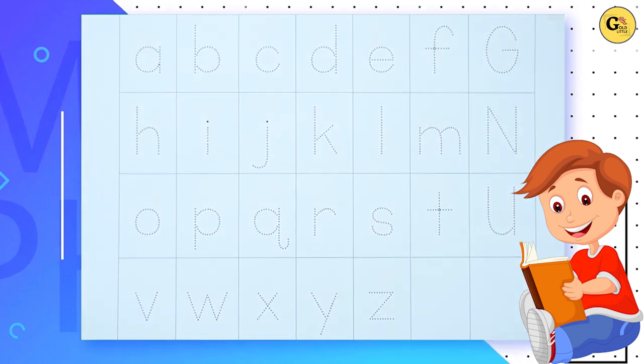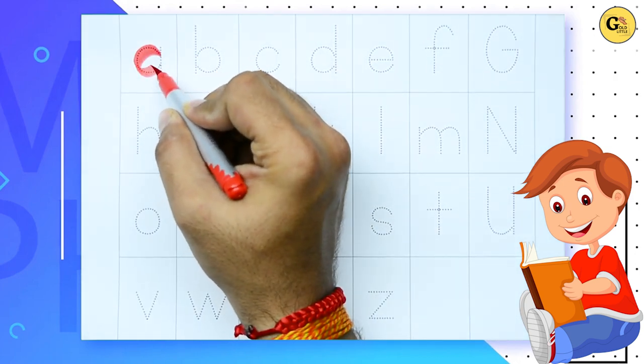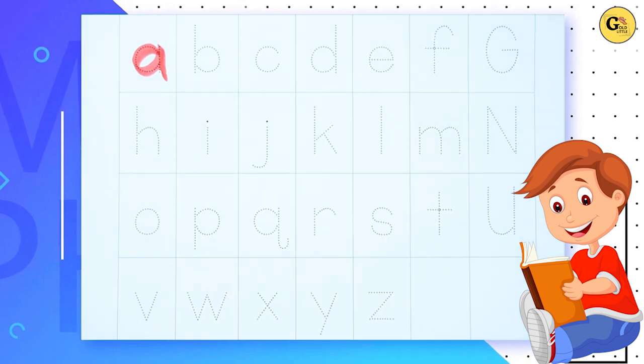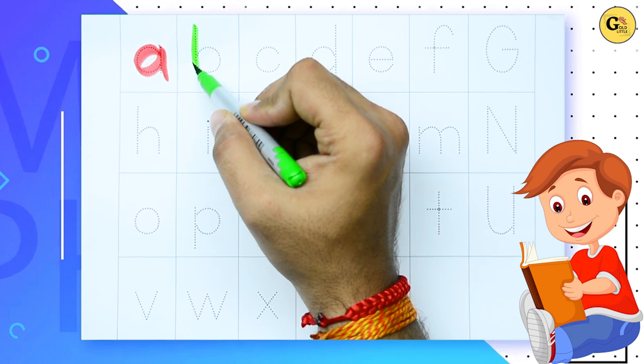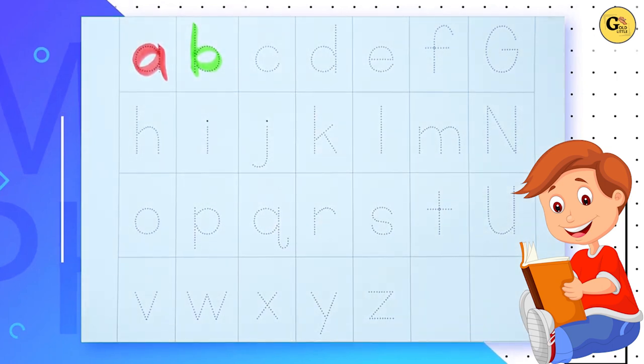a, small a with red color, it's a. b, b with green color, it's b, small b.